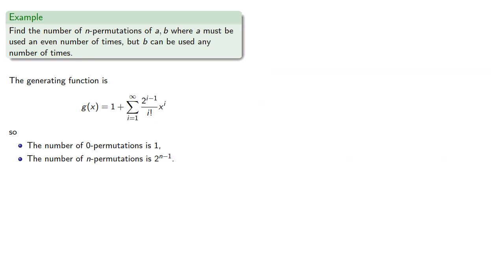What about the n permutations? Well, let's pick a value for n. So suppose n is equal to 10. The number of 10 permutations is quite a bit. Let's try n equals 4. We can find the 4 permutations directly. So a must be used an even number of times, but b can be used any number of times. So we'll find our 4 permutations.